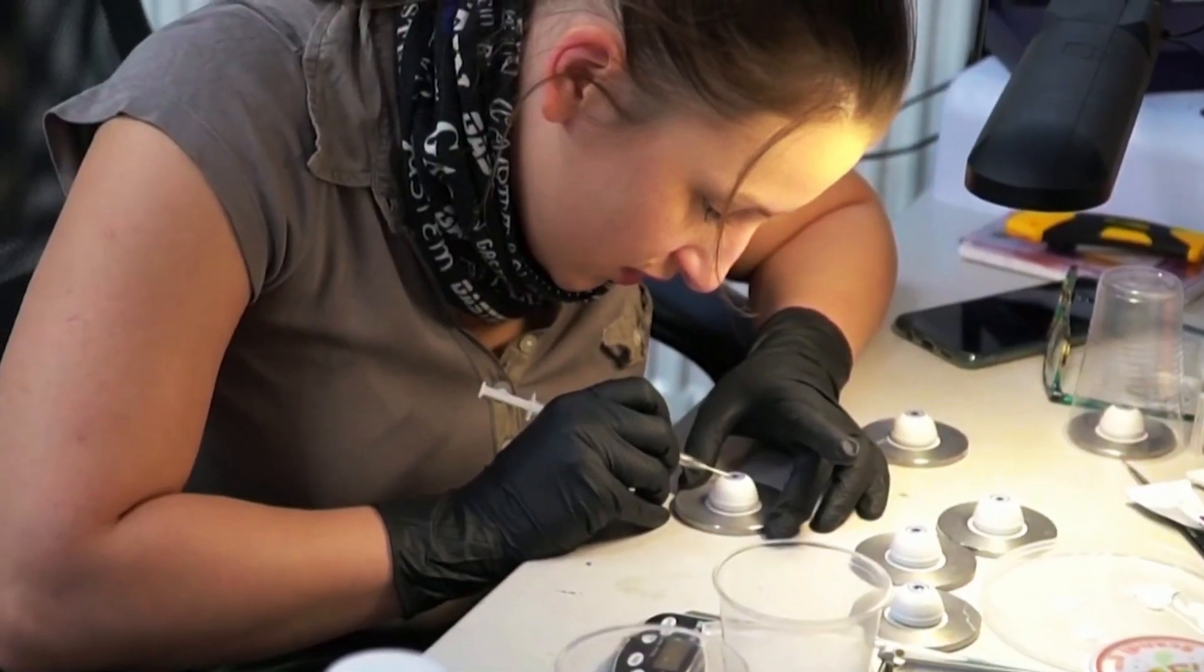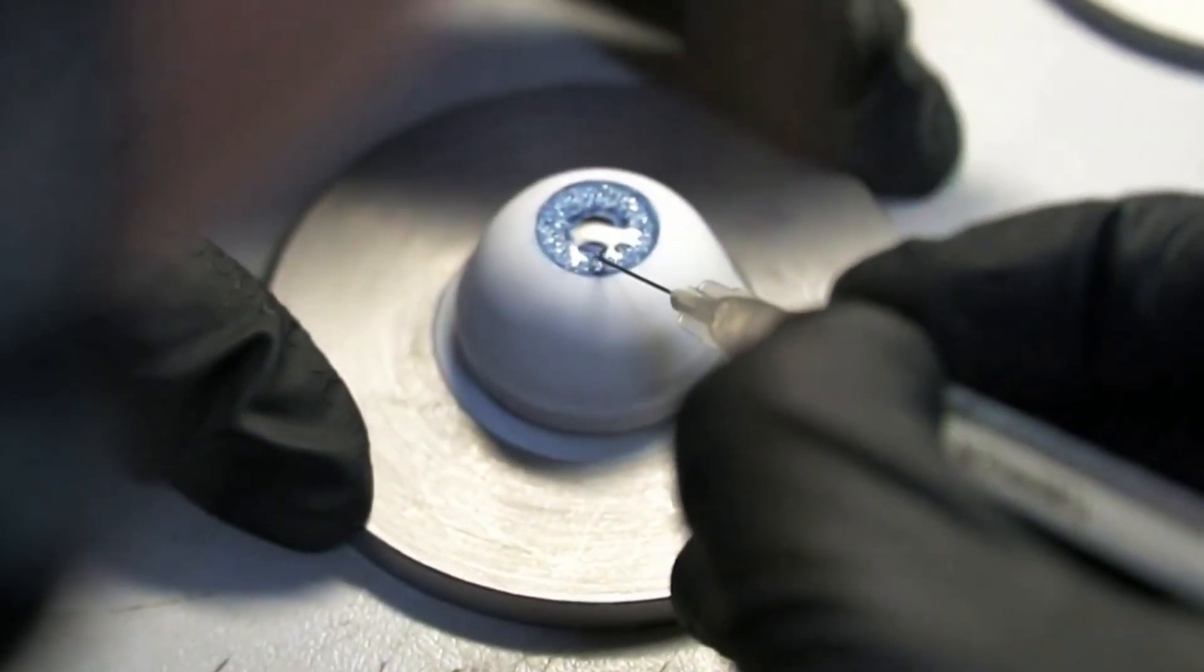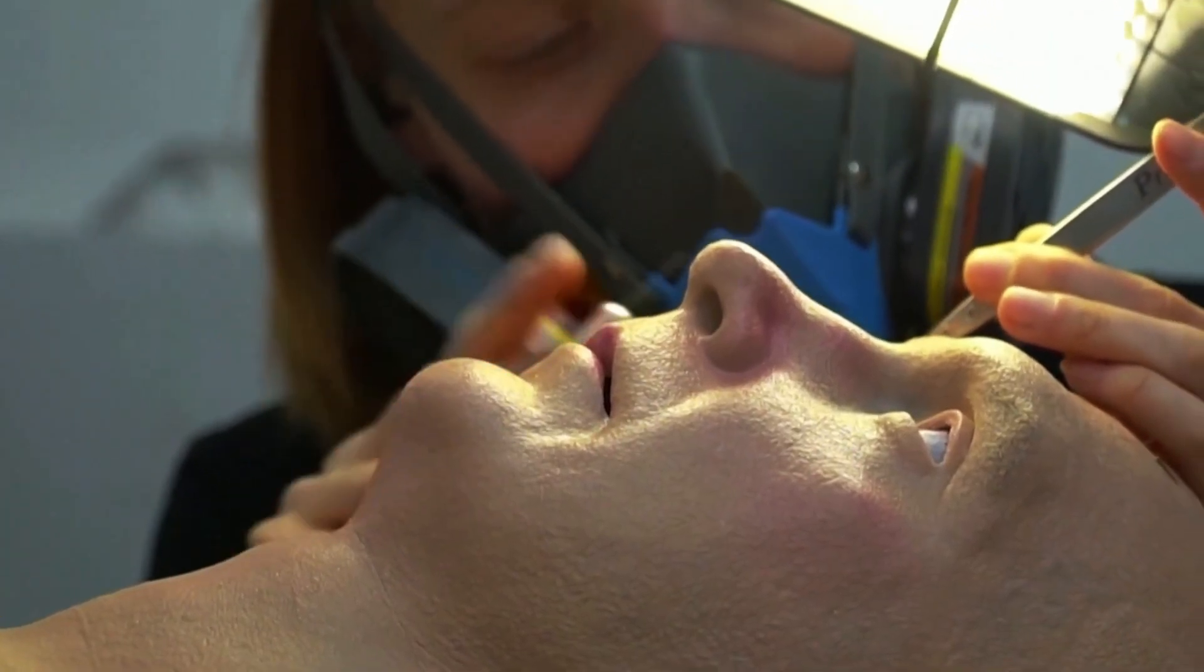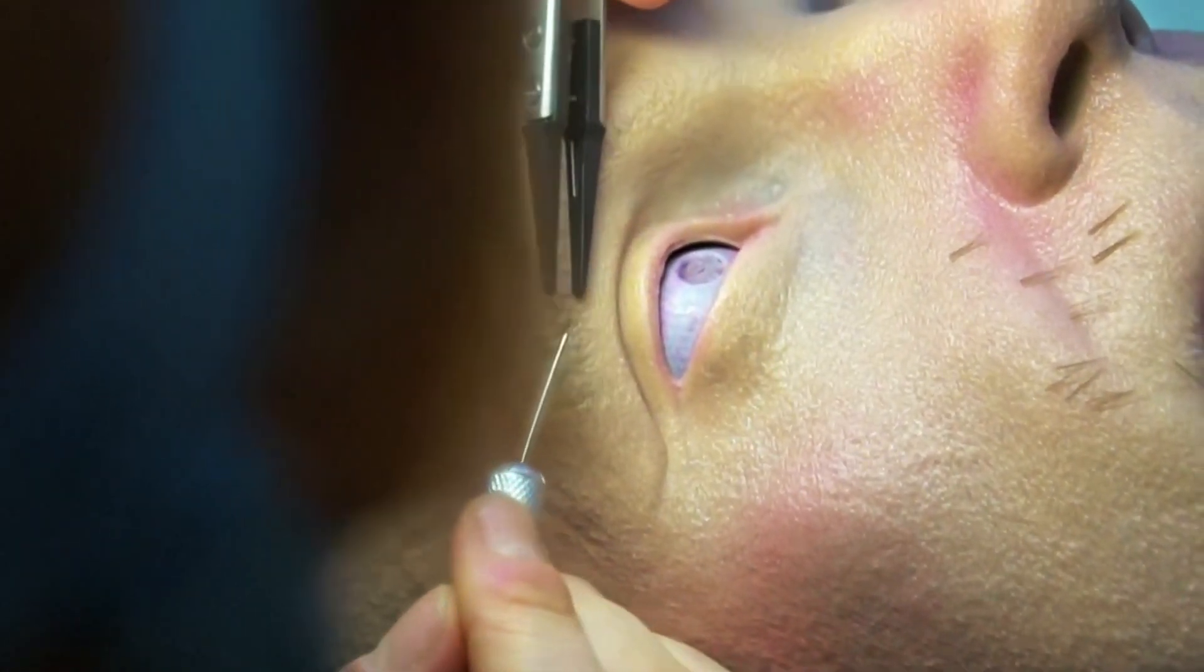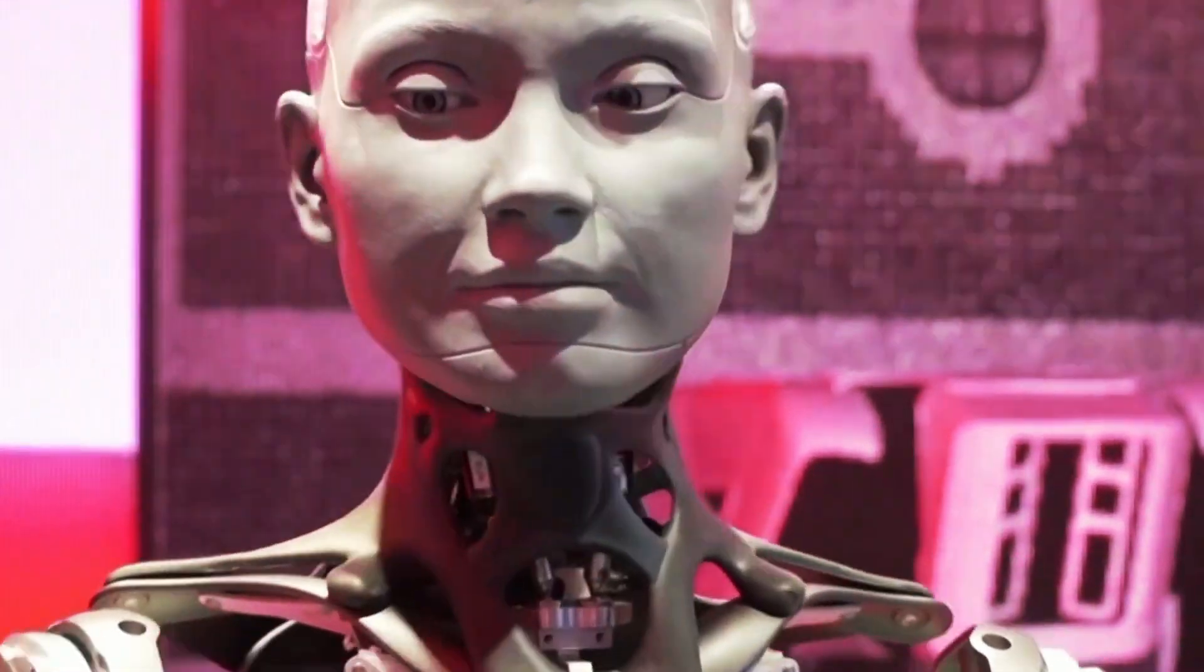A robot equipped with skin can sense subtle temperature changes and instantly detect a fire hazard in a factory. Another robot, its artificial skin mimicking the human sense of touch, gently cradles a newborn in a neonatal intensive care unit.